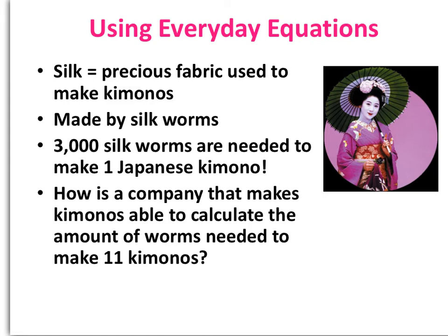Let's take a look at a real-life application of this concept. Silk is a precious fabric used to make very expensive clothing, and one type of clothing it's known for are kimonos. Silk is created by an animal called a silkworm, and there are 3,000 silkworms needed to make a single Japanese kimono. So if you were in the industry of making kimonos, you'd want to calculate the amount of worms needed to make a certain number — in our case, 11 kimonos. How many worms would it take to make 11 kimonos? To figure this out, we're going to set up a basic equation.